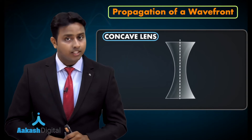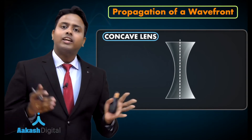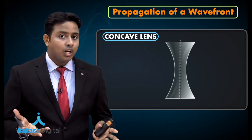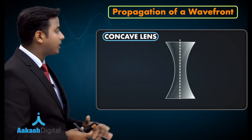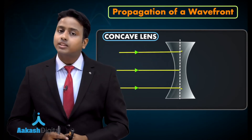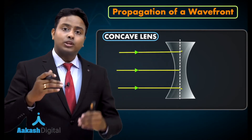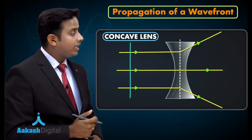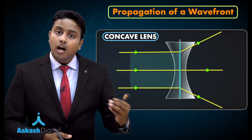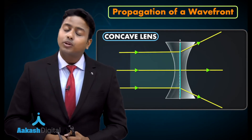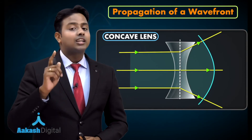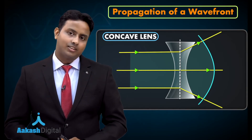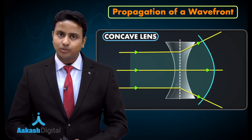For a concave lens, the lens is thin at the middle and thick at the edges — the opposite happens. When a planar wavefront is incident on a concave lens, the middle portion advances a little while the side portions remain behind. The plane wavefront emerging from the concave lens converts into a diverging wavefront whose center is on the left side of the lens — that is, the focus of the concave lens.